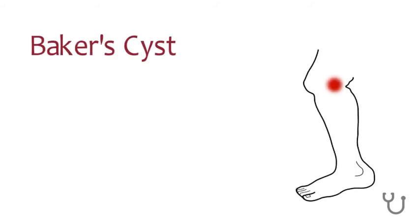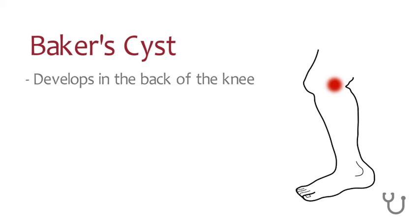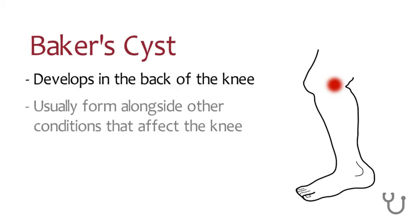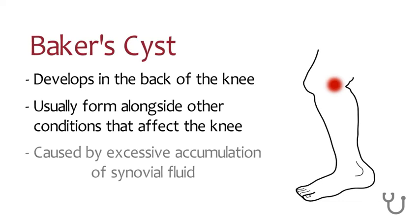A Baker cyst is a fluid-filled cyst that forms in the back of the knee. Baker cysts usually form alongside conditions like rheumatoid arthritis, gout, and meniscus tears. Excessive accumulation of synovial fluid in the space behind the knee causes this cyst.